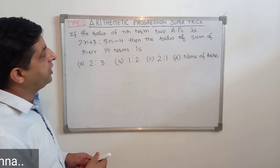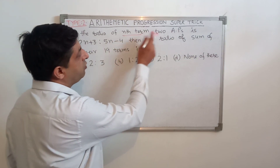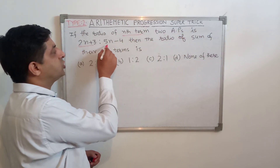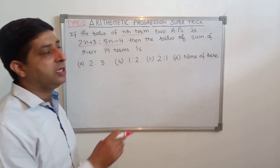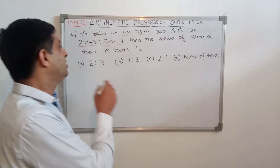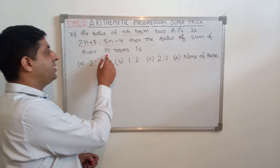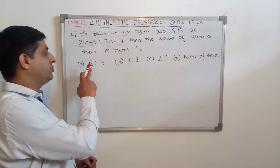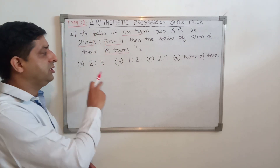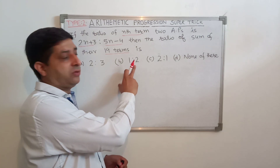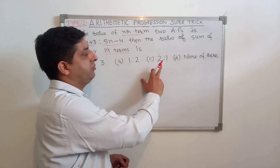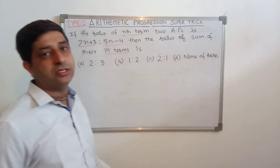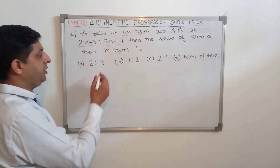Look at this question: if the ratio of the Nth term of 2 APs is (2N + 3) : (5N − 4), then the ratio of the sum of their first 19 terms is — option A: 2:3, option B: 1:2, option C: 2:1, option D: none of these.